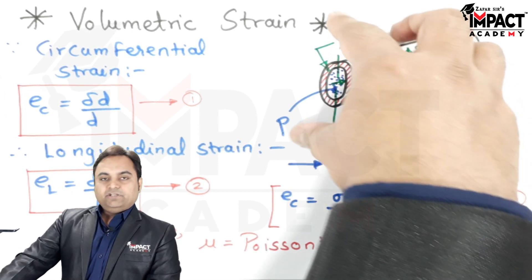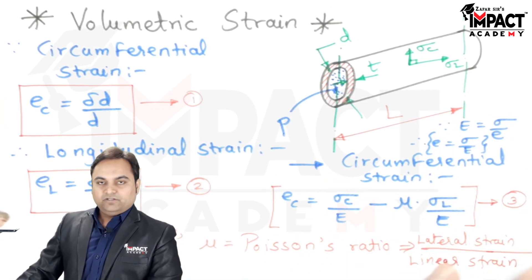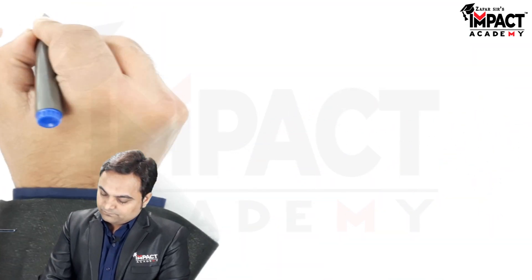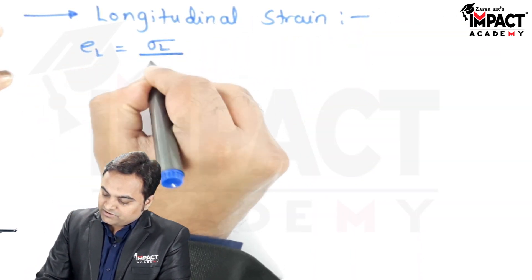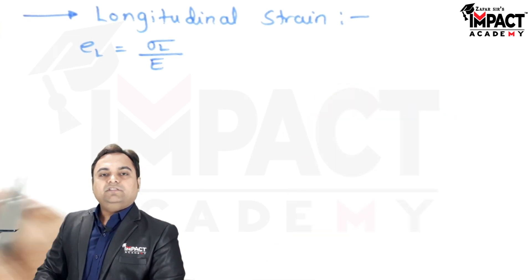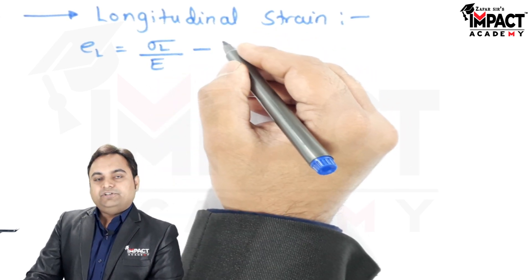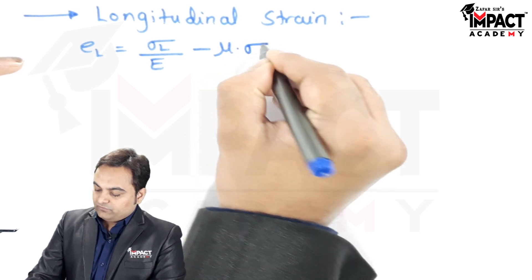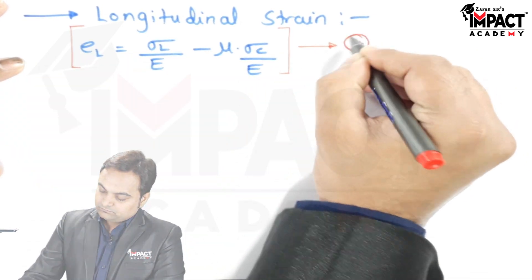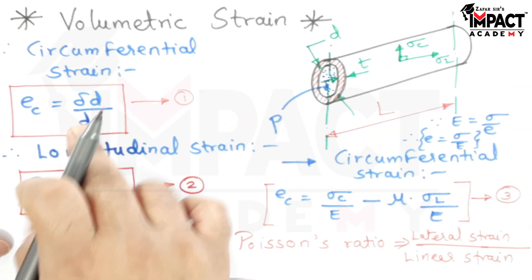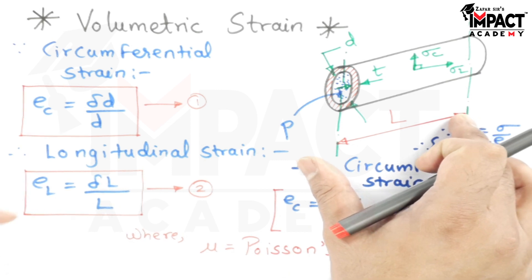Similarly, the longitudinal strain is given by longitudinal stress upon Young's modulus. When the length of the cylinder increases due to the longitudinal stress, the diameter reduces, so the effect on the diameter is the lateral strain, which is minus mu times circumferential stress divided by Young's modulus. These are the general formulas for circumferential strain and longitudinal strain, now applied to the complete thin cylinder.